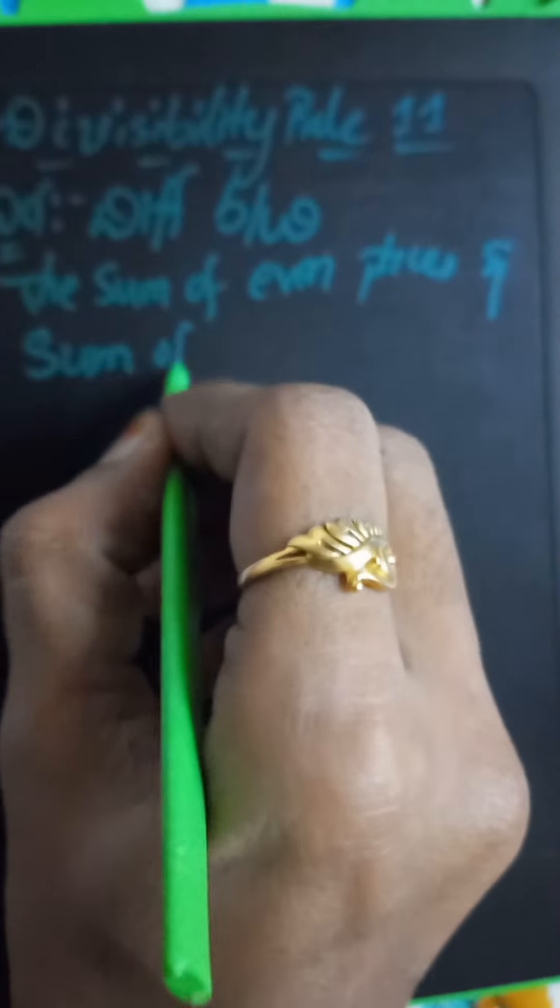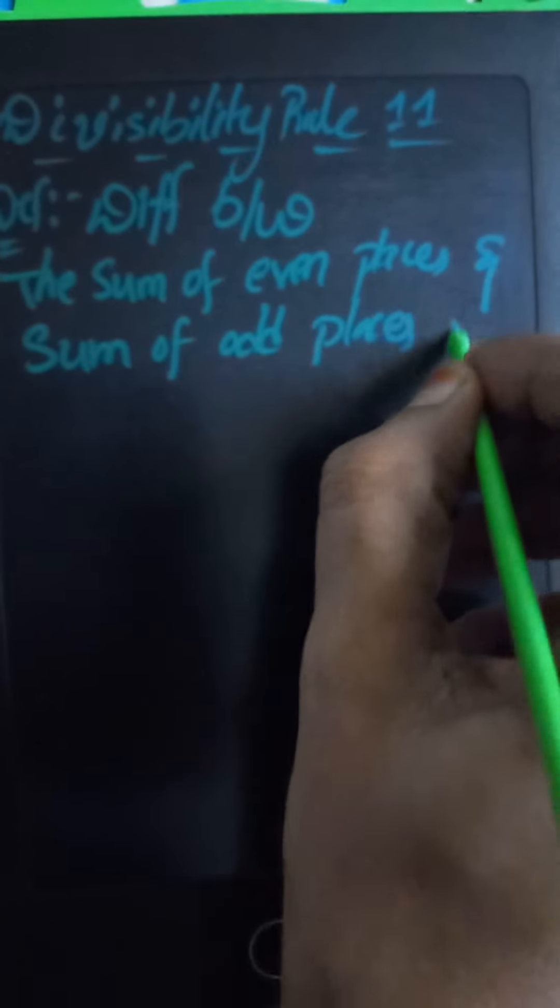sum of odd places - if the result is 0 or a multiple of 11.